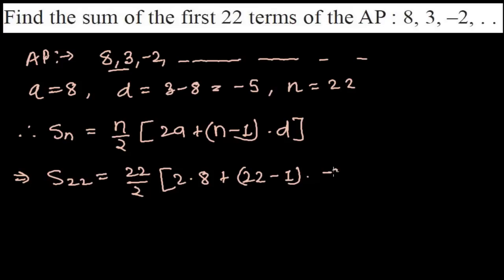So 22 divided by 2 is 11, times 2 times 8, so it is 16, plus 22 minus 1 that is 21 times minus 5. So now again 11 times 16 plus this, plus and minus it will be minus, 21 times 5 it will be equal to 105.